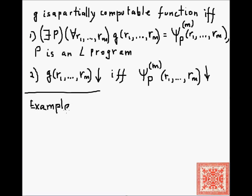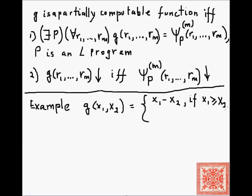Let's consider an example. An example would be, let's take g to be a function of two arguments. It is equal to x1 minus x2 if x1 is greater than or equal to x2, and it is undefined if x1 is strictly less than x2. This is a partially computable function.